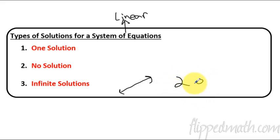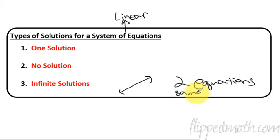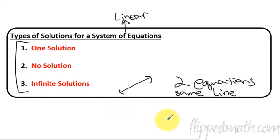So I don't know if you wanted to write yourself a little note here: two equations, but it's the same line. This is a really important thing to understand — these three things — because for the next three lessons, today's lesson and then the next two lessons after this, we are going to refer back to either one solution, no solution, or infinite solutions. It's just meaning one intersection point, no intersections, or a whole bunch of intersections because it's intersecting everywhere.